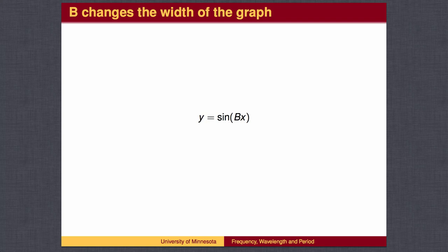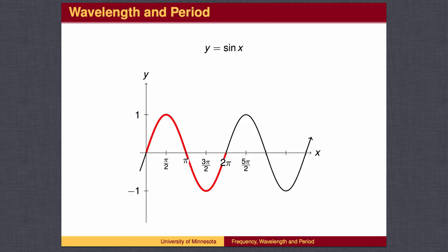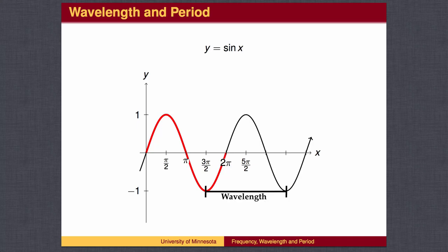Recall that multiplying the input doesn't make the graph wider — it makes the graph thinner. The graph of y equals the sine of x goes through one complete wave every 2 pi. The length of a wave is called the wavelength or the period, and we will use these terms interchangeably. The wavelength can be found by measuring the x distance between the top of one wave and the top of the next. For y equals sine of x, the period is 2 pi. We could also measure the wavelength using consecutive low points or the middle points.